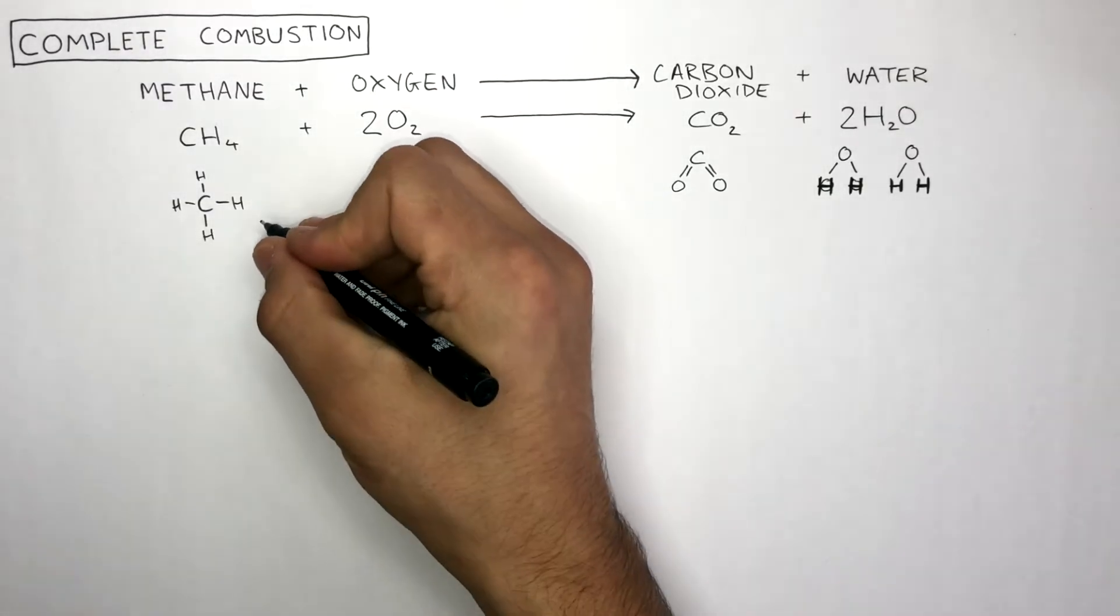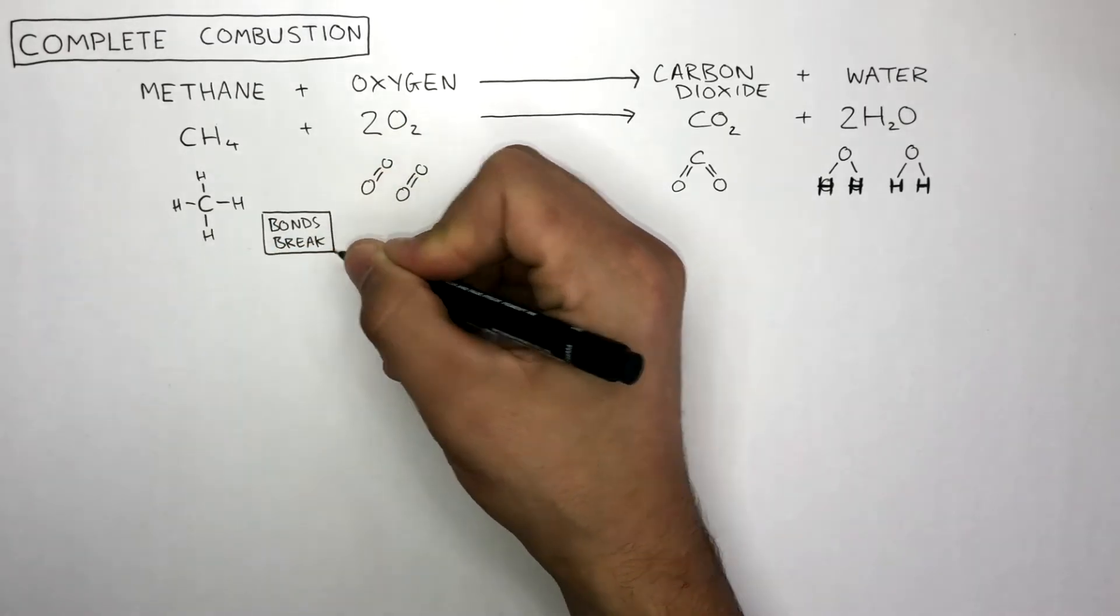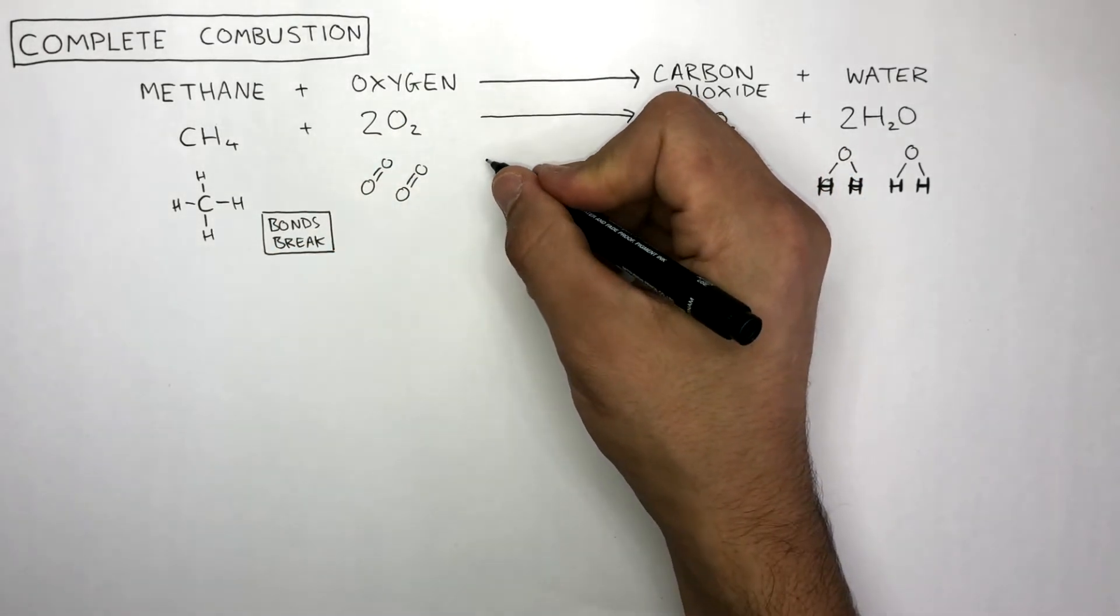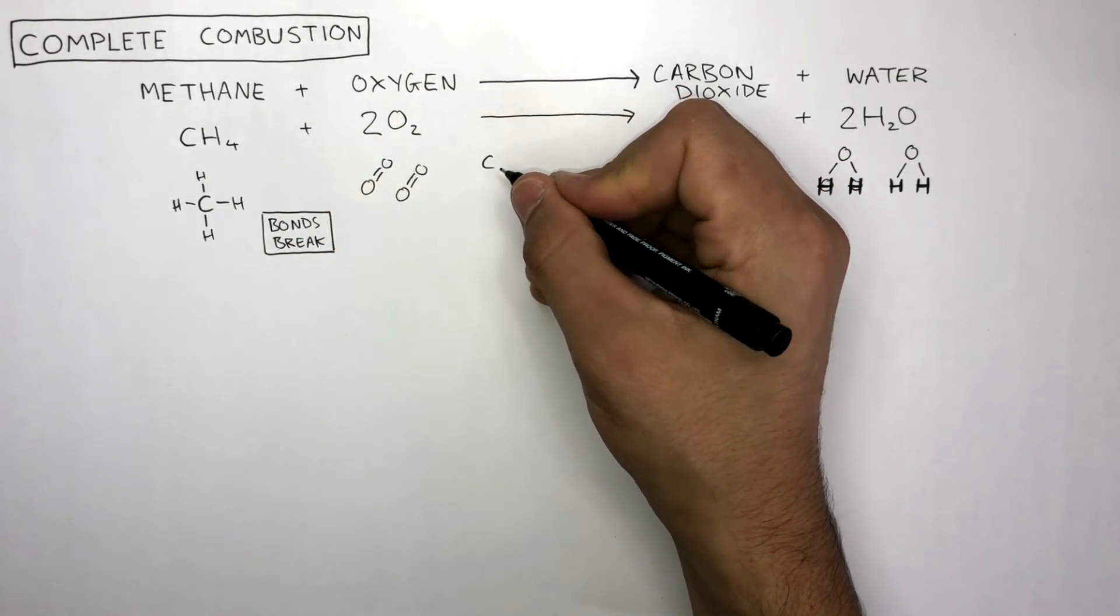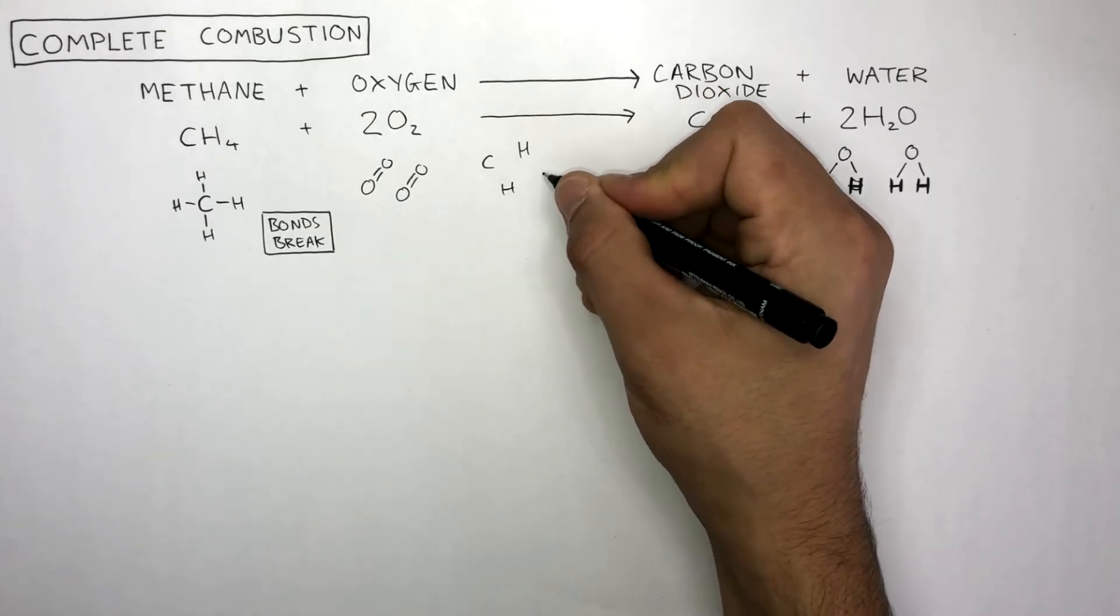For any chemical reaction to take place, first the bonds break. Here we have the atoms which are unstable and need to collide and react with one another to form new molecules to be stable.